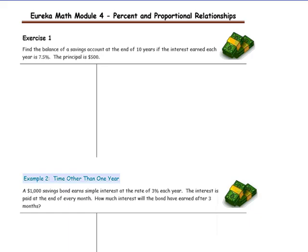Let's get started on exercise one. Find the balance of a savings account at the end of 10 years, if the interest earned each year is 7.5% and the principal is $500. The principal is the amount of money that you are either investing or borrowing. In this case, you are investing because it is a savings account.